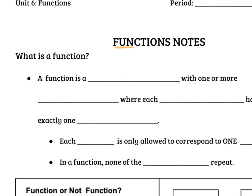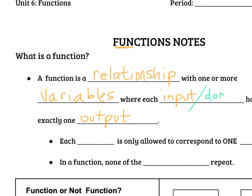A function is a relationship with one or more variables, which is just our letters, usually our x and y. Where each input has exactly one output. Could you also add, next to input, another name for input, maybe you've not heard of this word before, but it's domain. And another word for output is range.